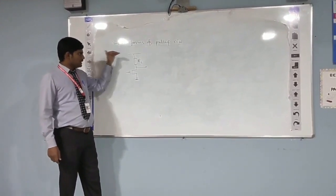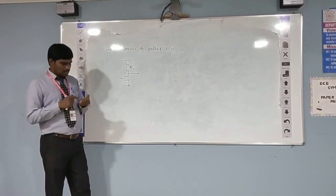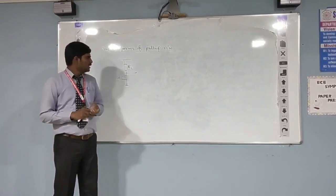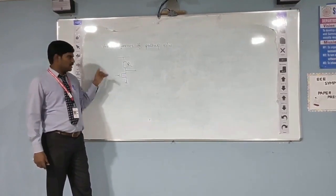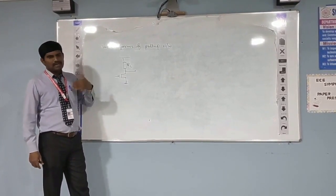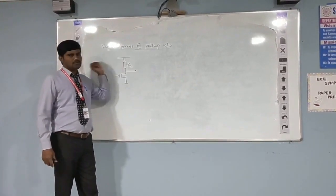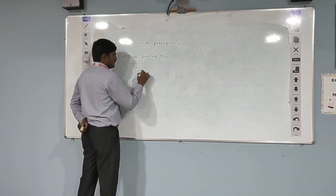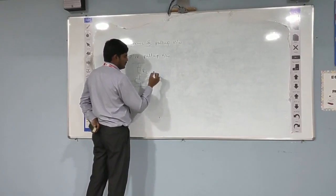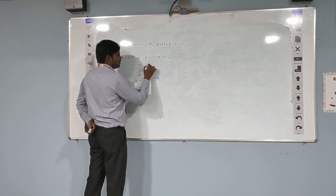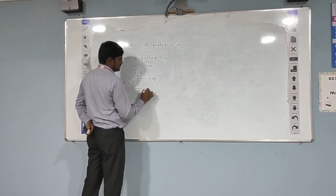So, for that case, we have basically four types of pull-up networks we can use: first one as a resistive pull-up, second, we can have an N-MOS depletion mode transistor, third, an N-MOS enhancement mode transistor, and finally, fourth one as a P-MOS device we can use in place of this resistive pull-up. So, this is RL, input as A, and the output, power supply VDD, and this as VSS or ground.